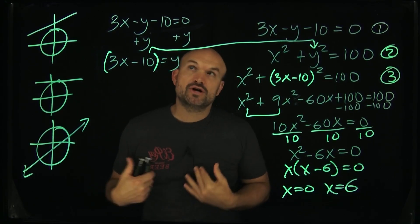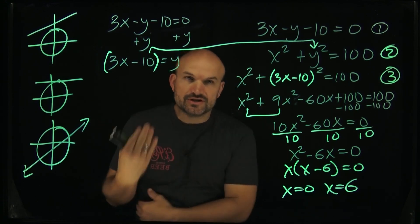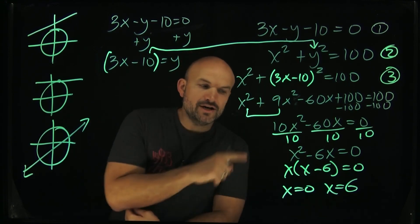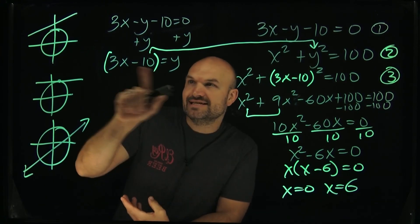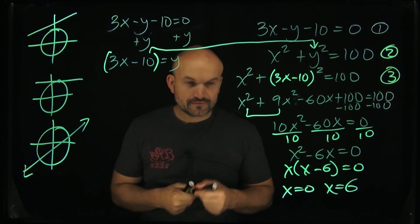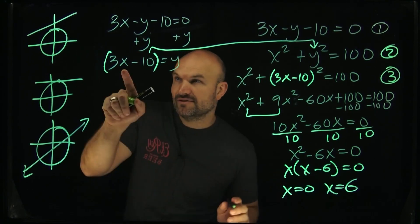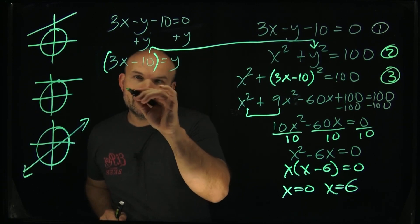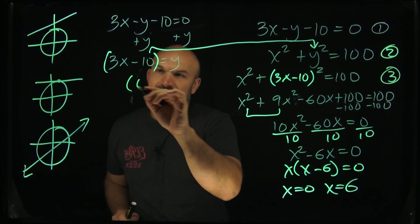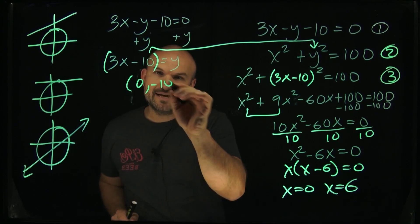The reason why using substitution is so helpful in this case is because if I know when x equals zero, I can solve for y by plugging in the value of x into this equation. Therefore, if I plug zero in for x, three times zero is zero minus 10 is going to be negative 10. So I have x equals zero and y equals negative 10.